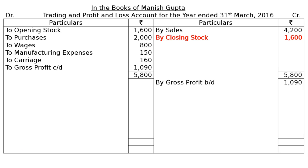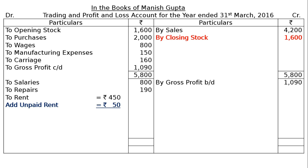All other office expenses will be shown on the debit side of the profit and loss account with adjustments. To salaries Rs. 800, to repairs Rs. 190, to rent Rs. 450. To this, unpaid (outstanding) rent of Rs. 50 will be added, showing it in the final column as Rs. 500.